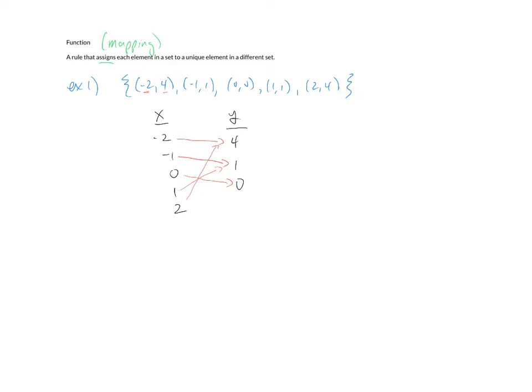Now we've got our rule assigning each element in a set to a different set, but for it to be a function it's got to be mapping to a unique element. Unique means only one, and we can visually understand that by looking at the arrows coming out of the x coordinates. You can see there's only one arrow going out, which means it's mapping to a unique element in our other set, in this case y. So for this first part we could say that yes, this is in fact a function.